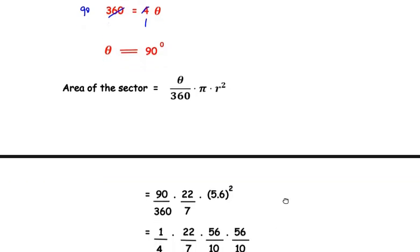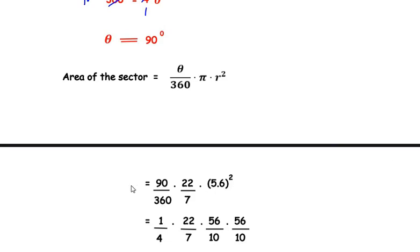Now the next step is simplification. Here we have written 90 and 360, they go in the table of 90 - that is 90×1 is 90 and 90×4 is 360. So we have represented 90/360 as 1/4, and 22/7 is written as it is. 5.6 squared, that is 5.6 × 5.6, I have again converted them into fractions, that is 56/10 × 56/10. Now let us simplify this further - that is 7×1 is 7 and 7×8 is 56. And 8 and 4 go in the table of 4, so 4×1 is 4 and 4×2 is 8.